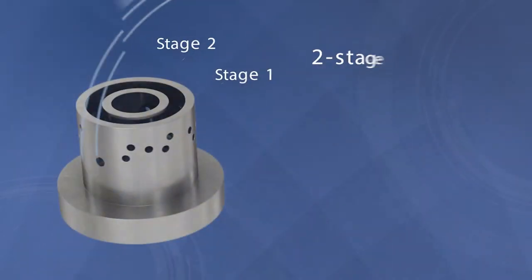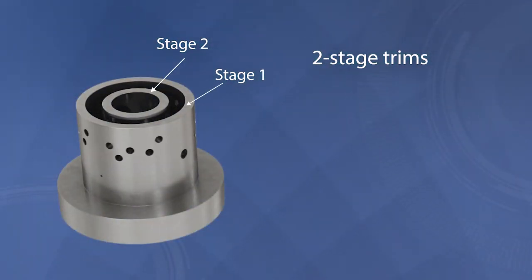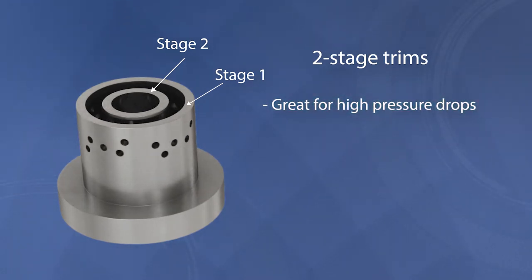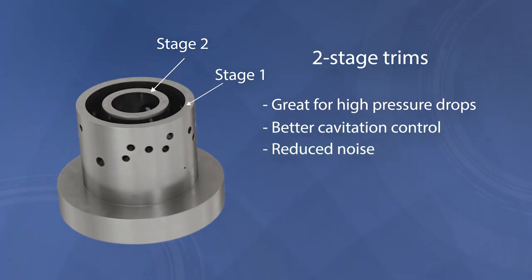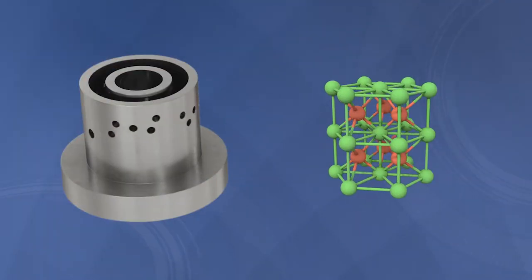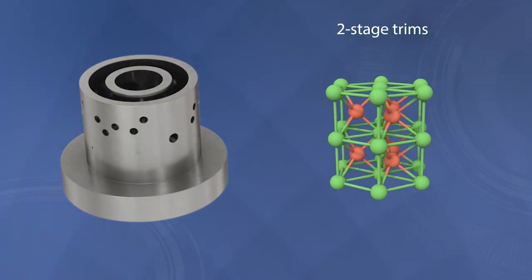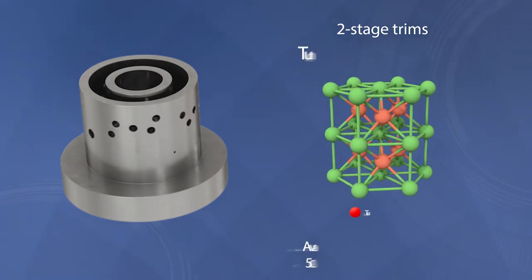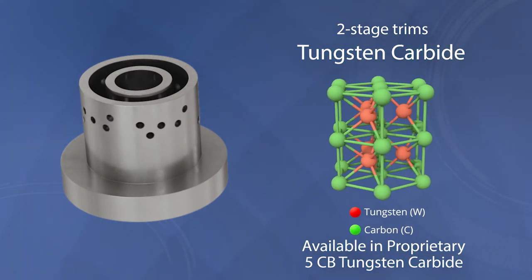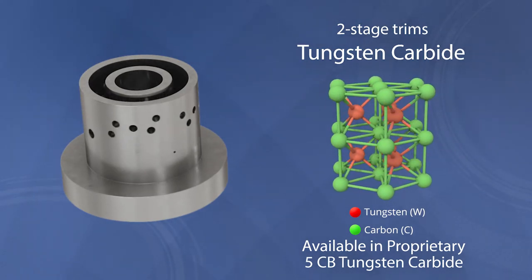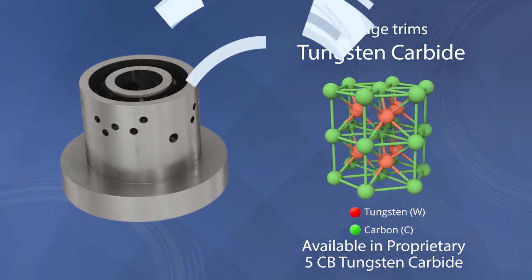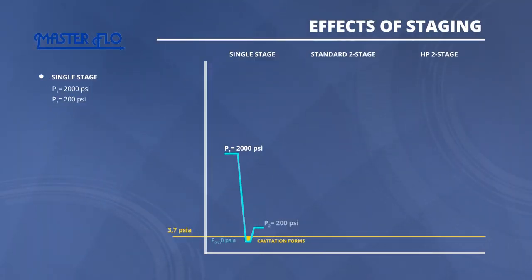For demanding applications with high pressure drops, two-stage trims can be used. They consist of concentric cages which handle pressure drops in stages, reducing the pressure dip at the vena contracta. This results in better control over cavitation and noise. MasterFLOW's multi-stage trims are available in service-specific materials, including the proprietary 5CB tungsten carbide, for higher erosion and corrosion resistance. Multi-stage trims can also be engineered to provide custom flow curves, and the effects of staging can be seen on these graphs.